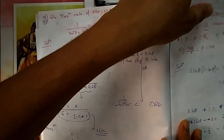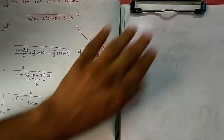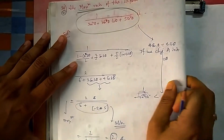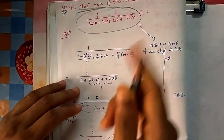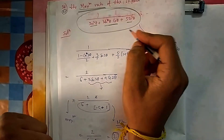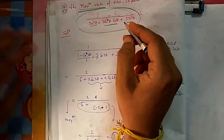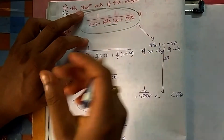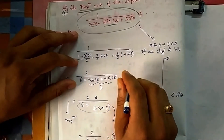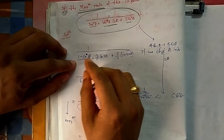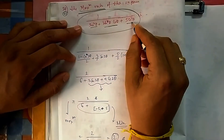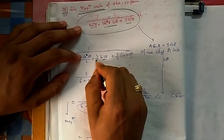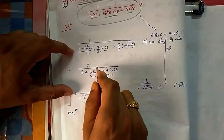For question 21, we need the maximum value of this trigonometric function. Differentiation of such a long expression would give a huge computation, so instead I convert everything using double angle formulas — sin²θ = (1 − cos 2θ)/2 and cos²θ = (1 + cos 2θ)/2 — to eliminate squared terms and get a linear expression in sin 2θ and cos 2θ, which is much easier to handle.